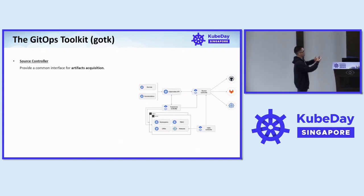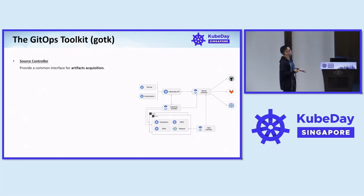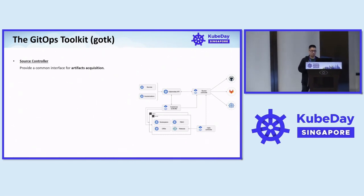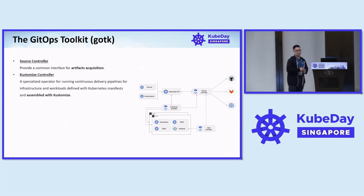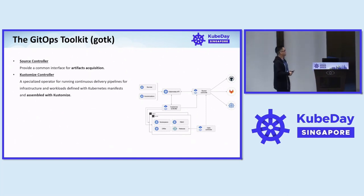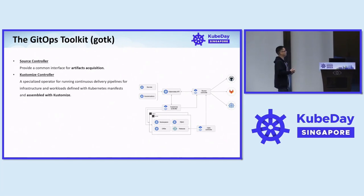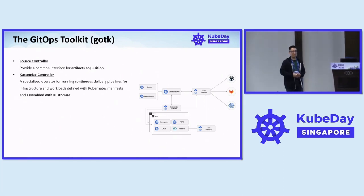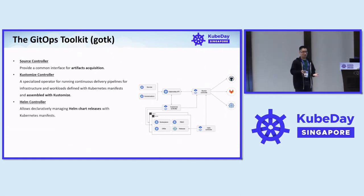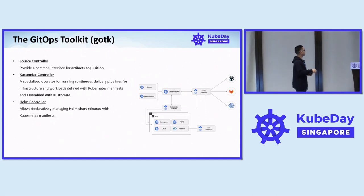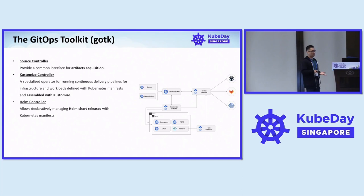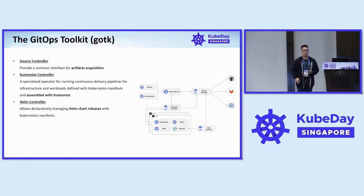The GitOps toolkit or GOTK is a bunch of components. It has a source controller that provides a common interface for artifact acquisition — it manages Git repositories, OCI repositories, and buckets. As long as it's a source, it manages it. There's also the kustomize controller — it runs CD pipelines assembled with the kustomize tool, which is like a Kubernetes-specialized operator. And there's a Helm controller, because Flux is very centered around both kustomize and Helm. Everything within it runs on kustomize, and Helm is a first-class citizen, allowing you to manage Helm chart releases by writing YAML files.